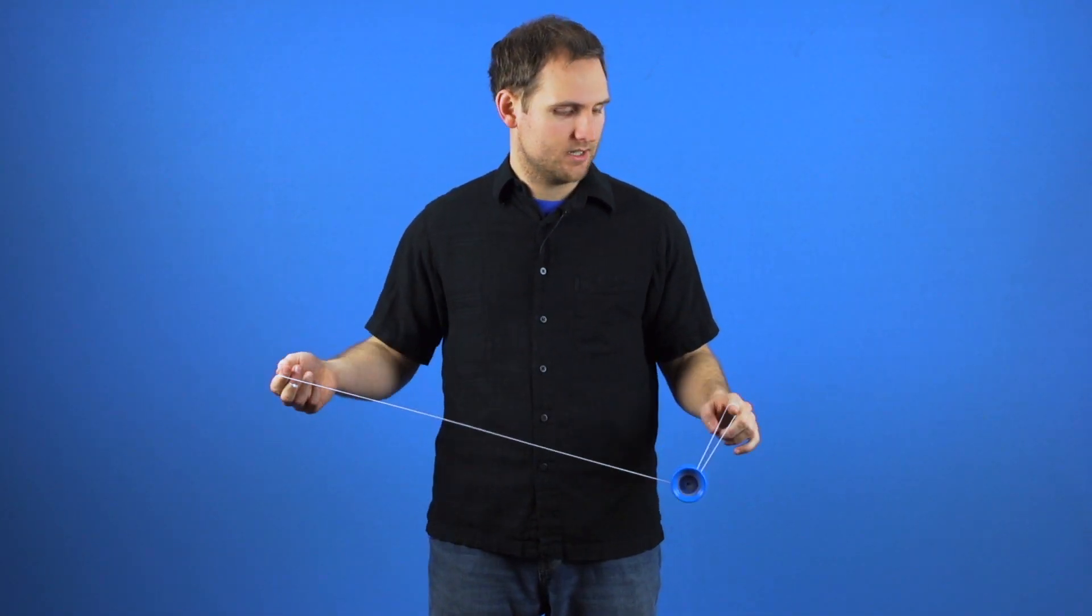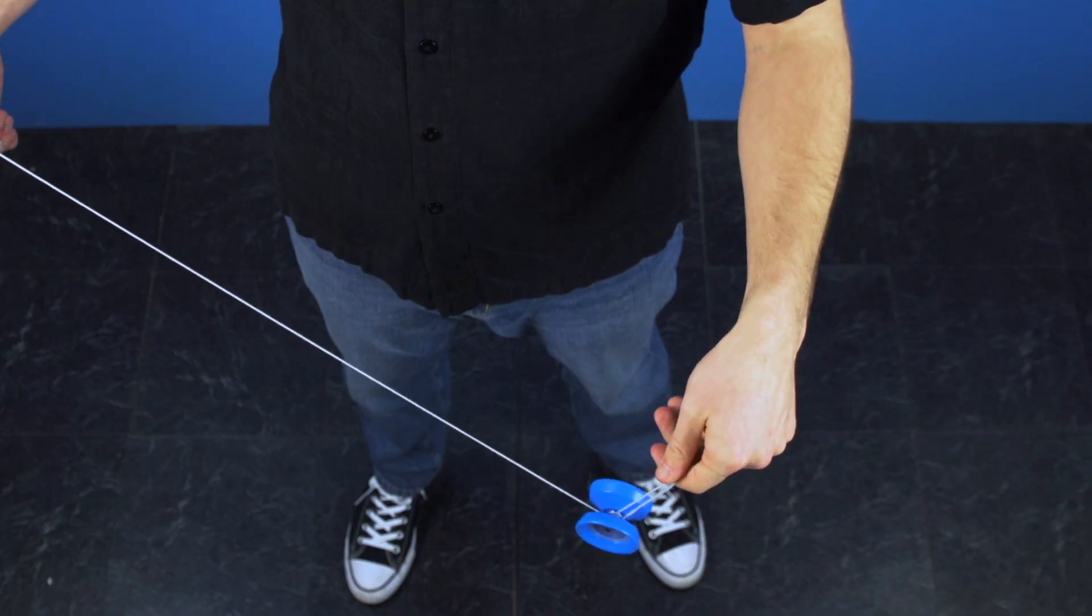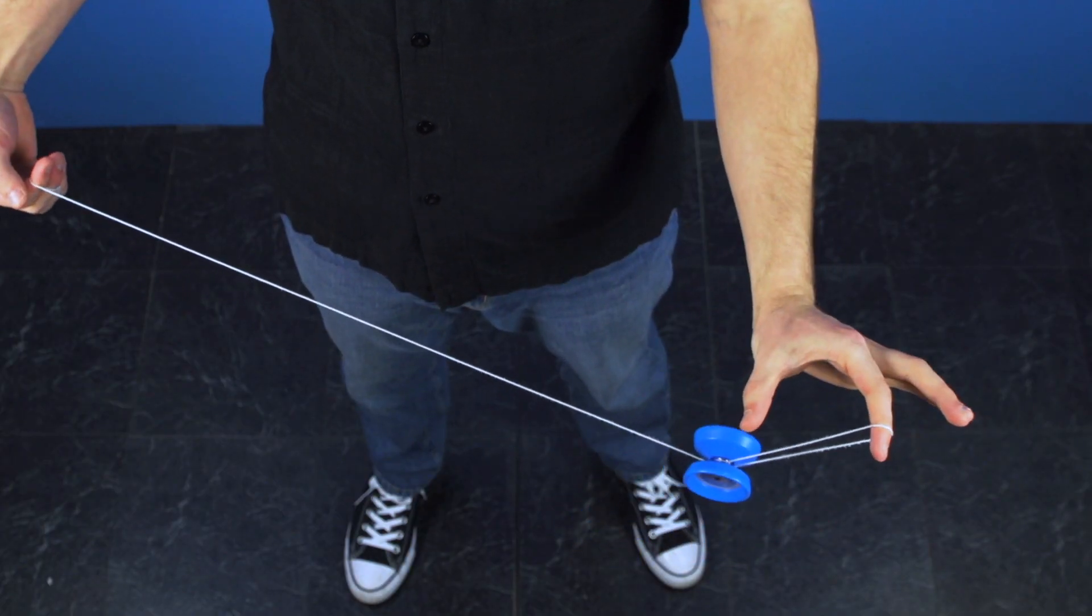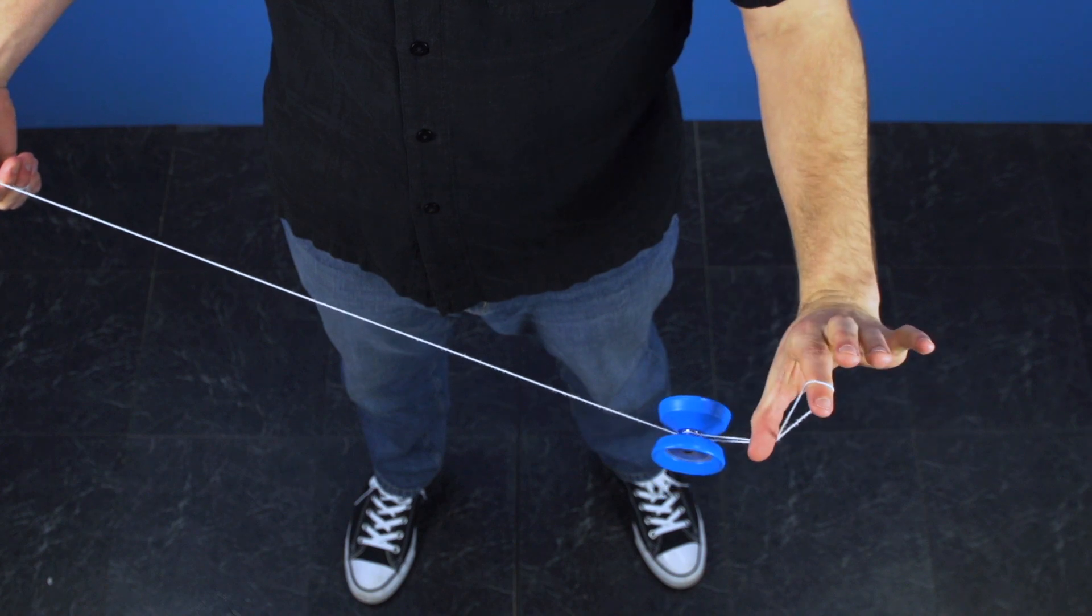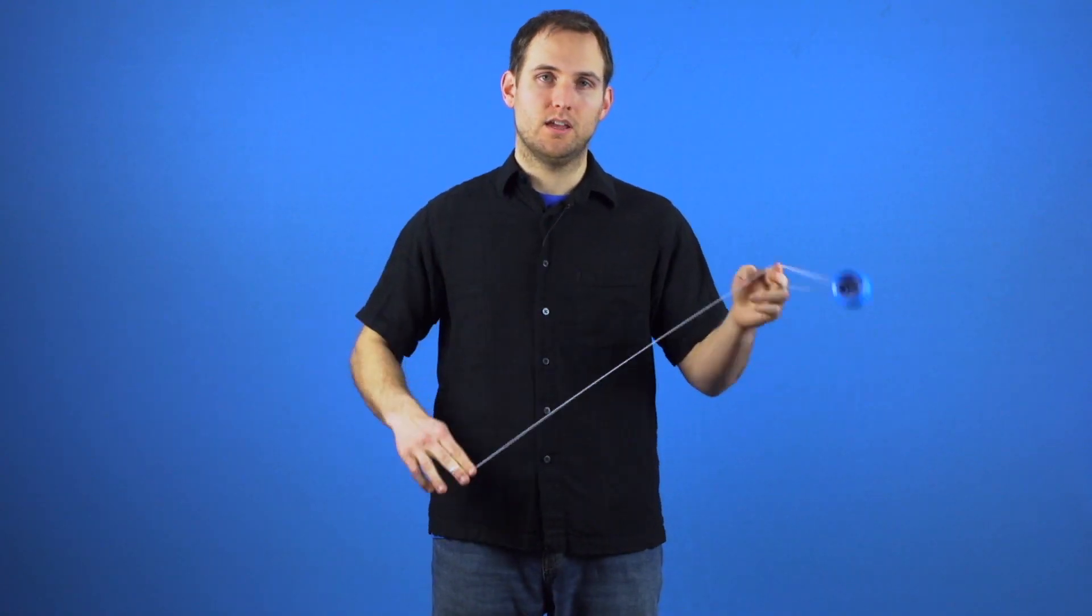When you learn the trick there are going to be a few tips that will make learning it a lot easier. First, you want to make sure that the string is as close to the tips of your fingers as you can. You also want to make sure that you spread your fingers out as wide as you can and really maintain that kind of C shape. If you bring your fingers too close together that will not work.